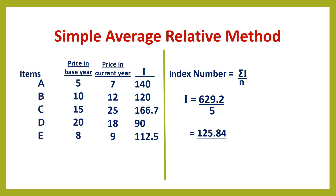For the application of this formula, items A, B, C, D, and E are given with prices in the base year and current year. The formula used is index number equals Sigma I divided by N. We calculate I, which is P1 divided by P0 into 100, for each item. For example, 7 divided by 5 into 100 equals 140; 12 divided by 10 into 100 equals 120. Similarly, I is calculated for each item. The sum of all these values, Sigma I, is 629.2.